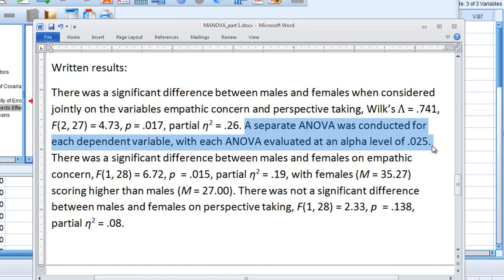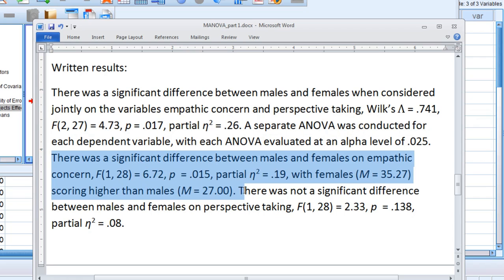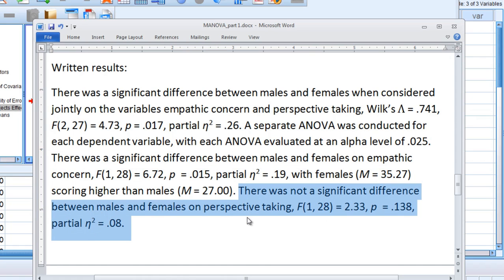First of all, saying what each ANOVA was conducted at, what alpha level. Then I gave the significant result and discussed the group means, so the reader would know which group was higher. And then I gave the non-significant results after that.